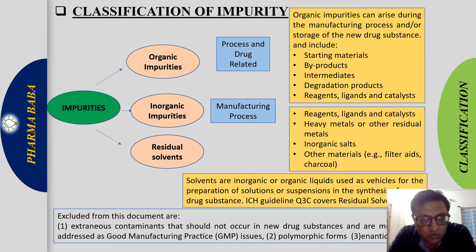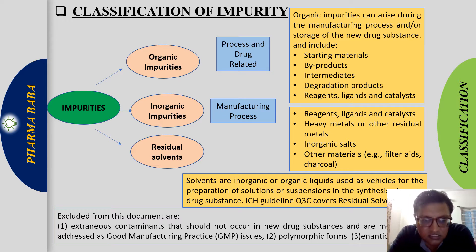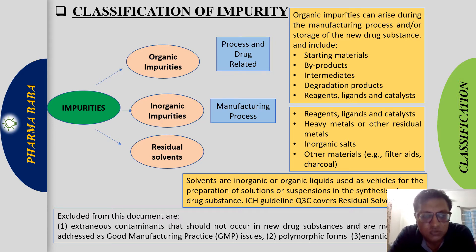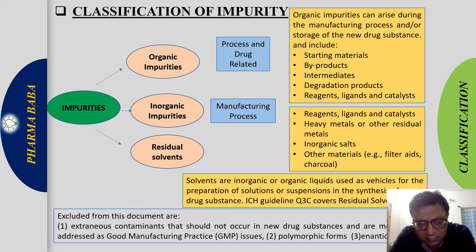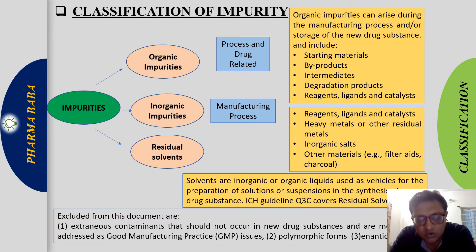Inorganic impurities and residual solvents will be discussed in detail in separate parts of the ICH guideline. In this video, we will focus on organic impurities covered by ICH Q3A. Extraneous contaminants are addressed in GMP and not covered in this document. Polymorphic forms and enantiomeric impurities are also not covered here and will be covered in further videos.